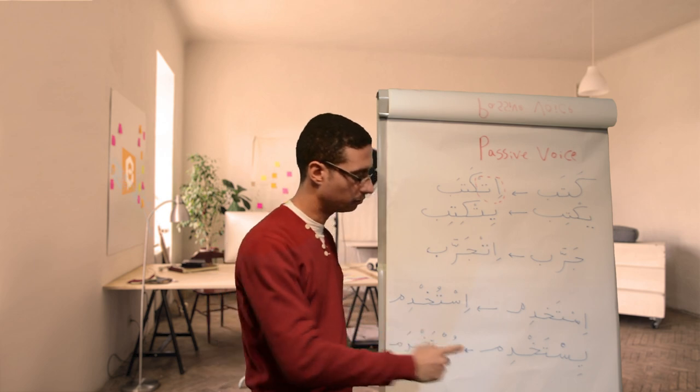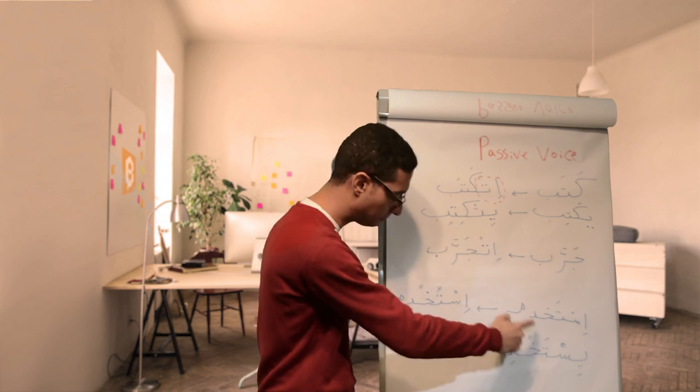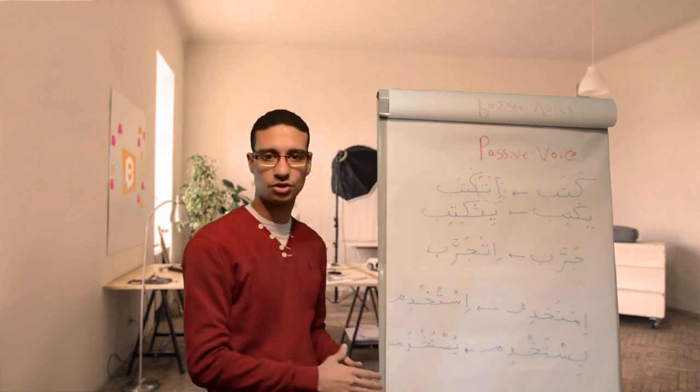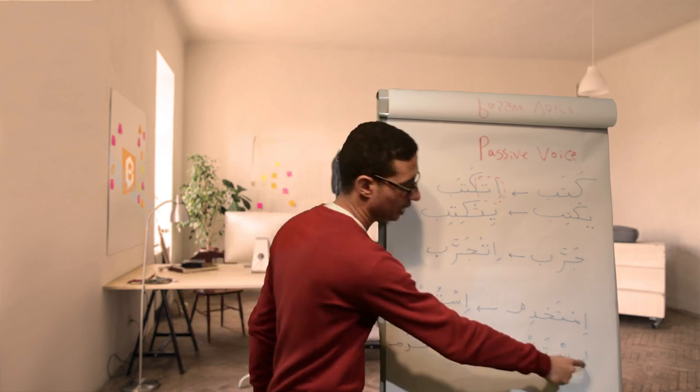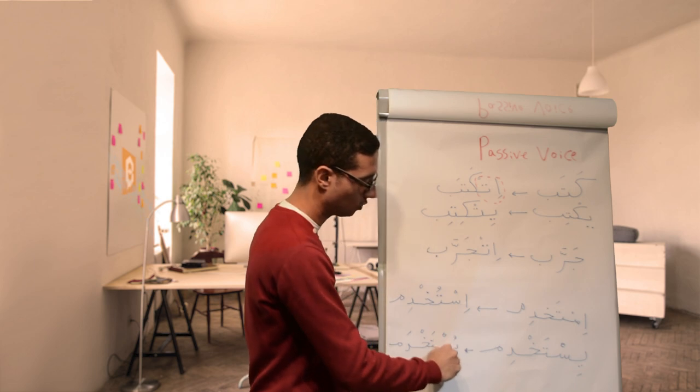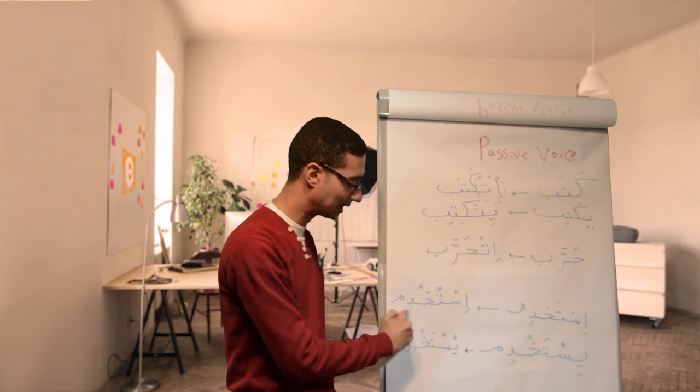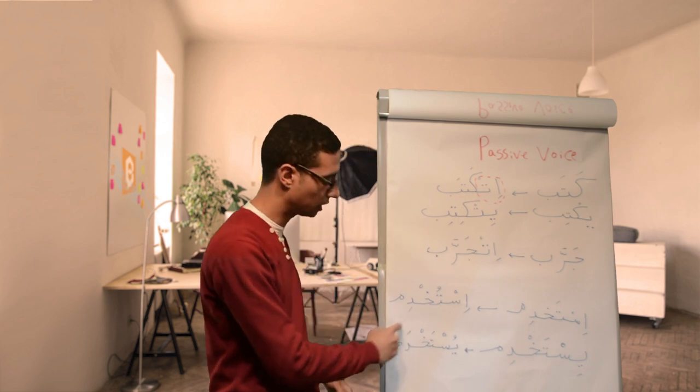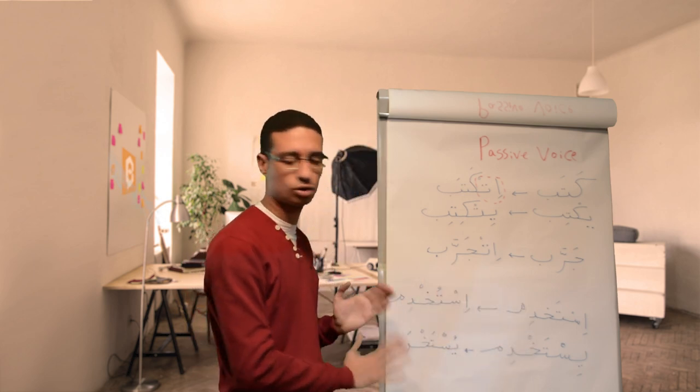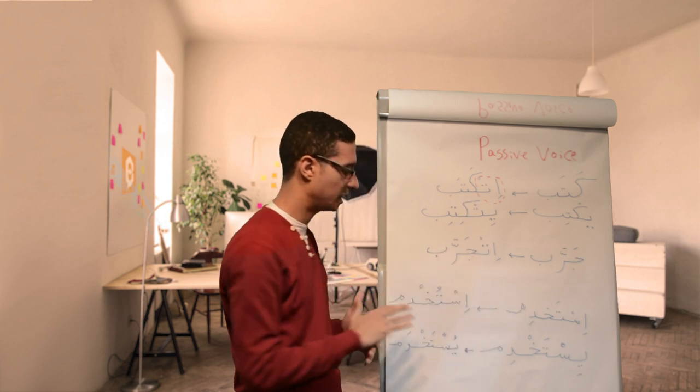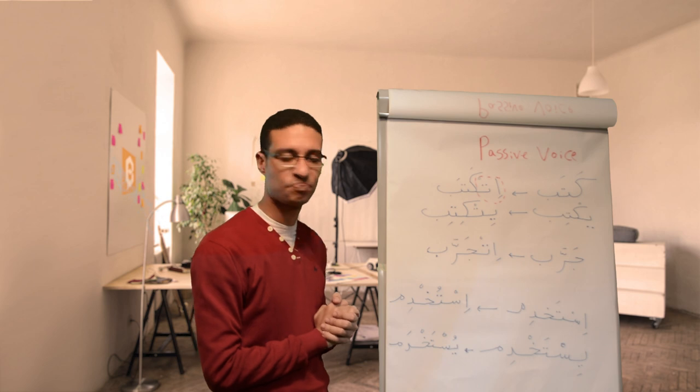Okay. For a longer verb like istakhdim, in the present will be yastakhdim. So the form will be different because we will stick to standard Arabic here. And it will be yustakhdim. So that yustakhdim. The ya will be, it will have, we will put damma on the ya. So yustakhdim. And we will put fatha on the letter before the last one. But this one, these verbs are not commonly used in the passive voice.